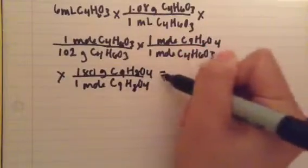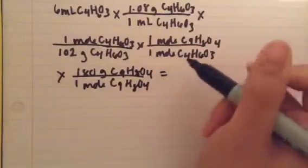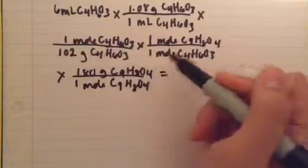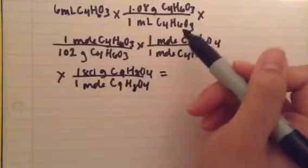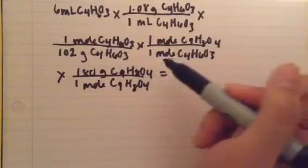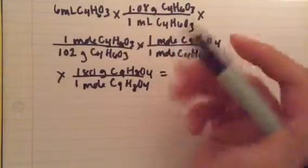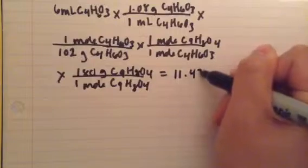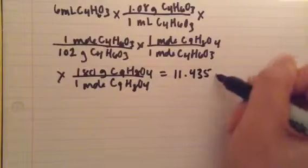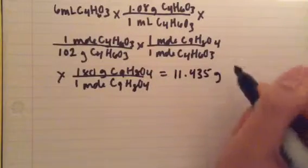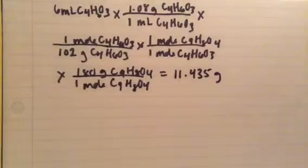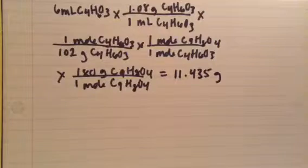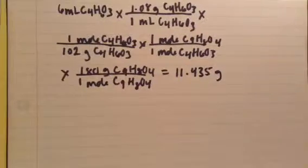After doing all the math — multiplying all the numbers at the top and dividing by 102 — the answer is 11.435 grams of acetylsalicylic acid that should theoretically be made.